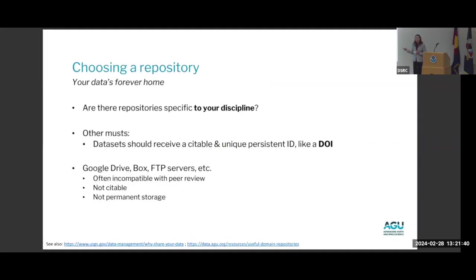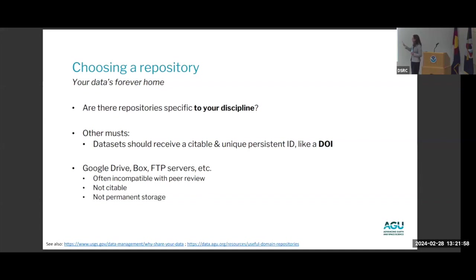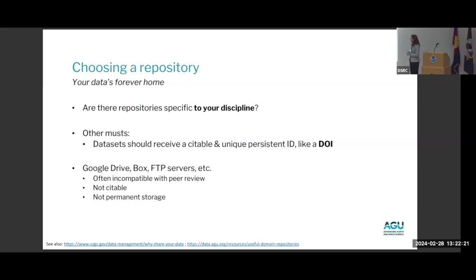Choosing a repository for your data is an important question that depends on domain and whether you're working for a federal agency. We have an email helpline at data help at AGU.org that can help you, and there are many resources online. Ideally your repository should be specific to your discipline so they can offer the best advice on documenting your data for reuse, and it should offer a citable and unique persistent identifier like a DOI. Google Drive, Box, and FTP servers can be used for temporary storage but are not great for permanent storage.